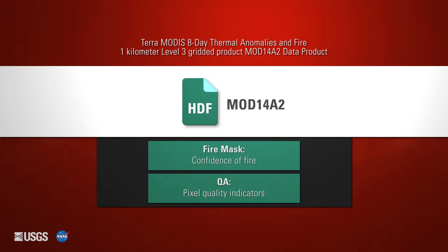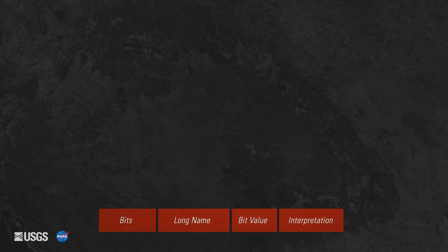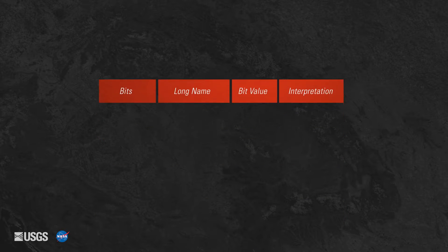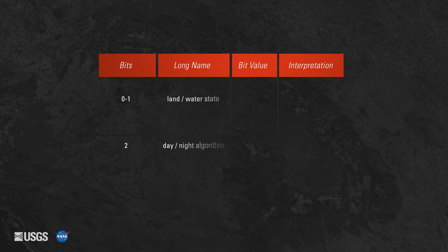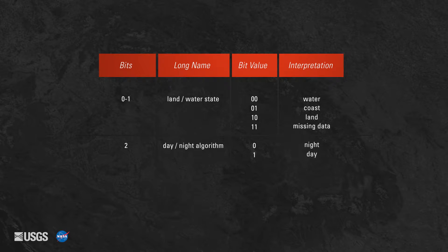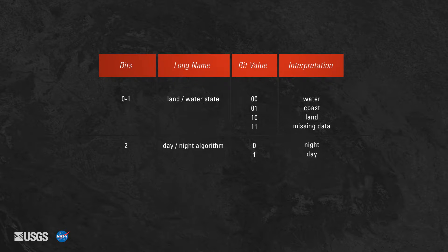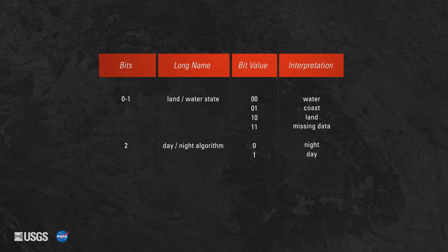The information extracted from this quality layer can be used to filter data based on different levels of quality. Each MOD14 Thermal Anomalies and Fire product contains one Quality Assurance, or QA, layer. The QA layer contains pixel-level quality assurance information.